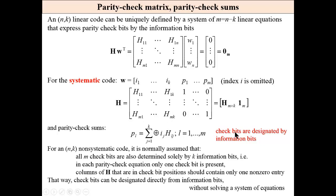And we may then formulate parity check sums like here. Each parity check bit is expressed by information bits and components of the parity check matrix. These are called parity check sums.